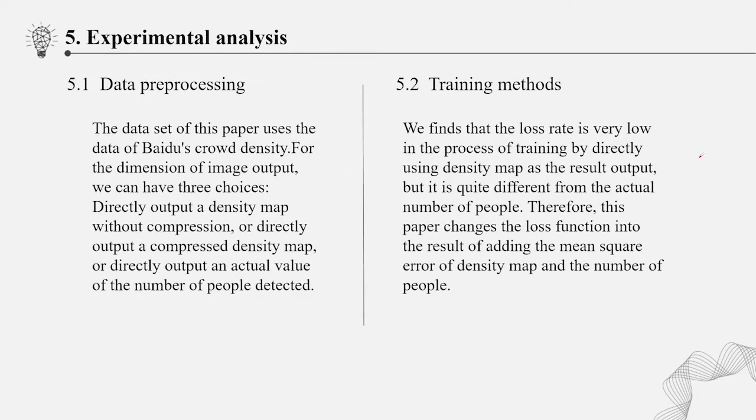Experimental analysis. Data preprocessing. The data set of this paper uses the data of Baidu's crowd density. For the dimension of image output, we can have three choices: directly output a density map without compression, or directly output a compressed density map, or directly output an actual value of the number of people detected.